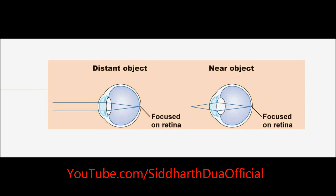When the ciliary muscles contract, the eye lens roundens. Hence, the focal length decreases and you are able to see nearby objects.